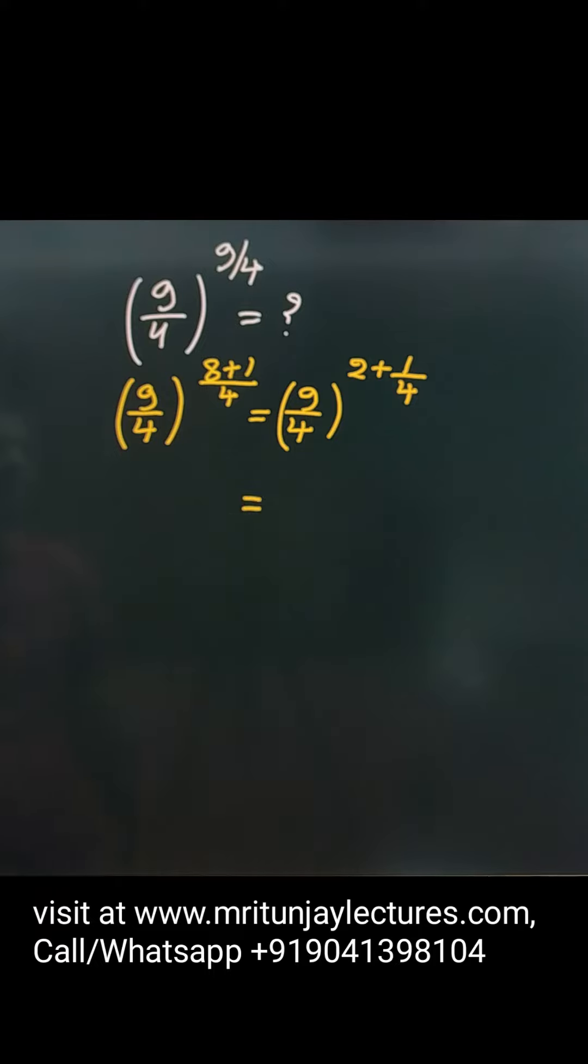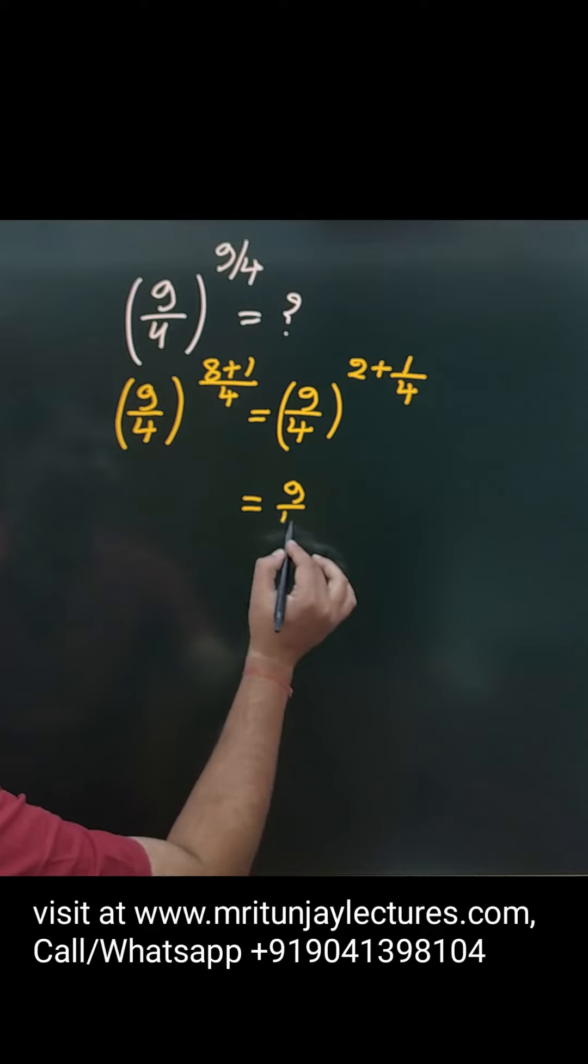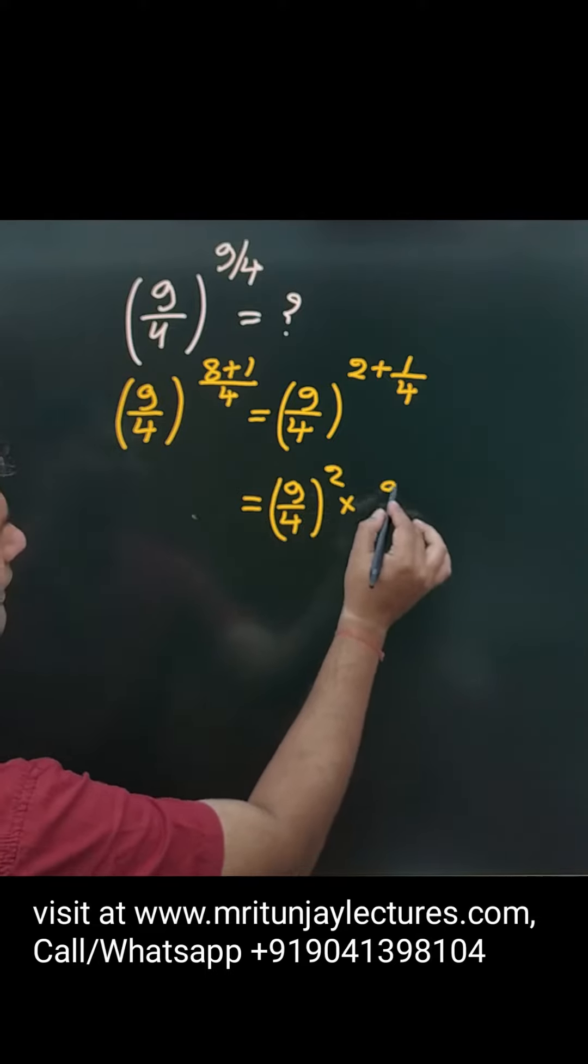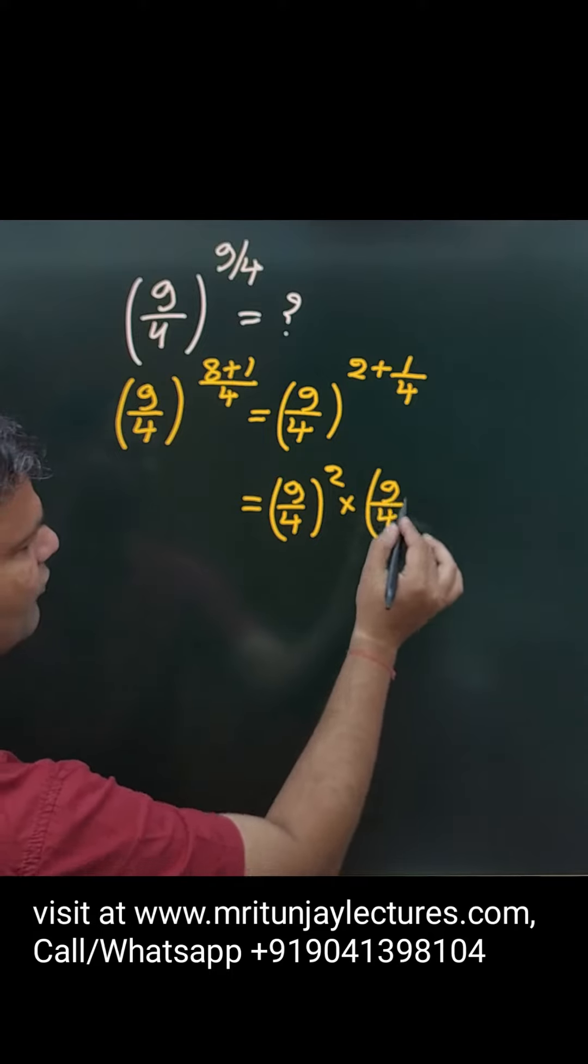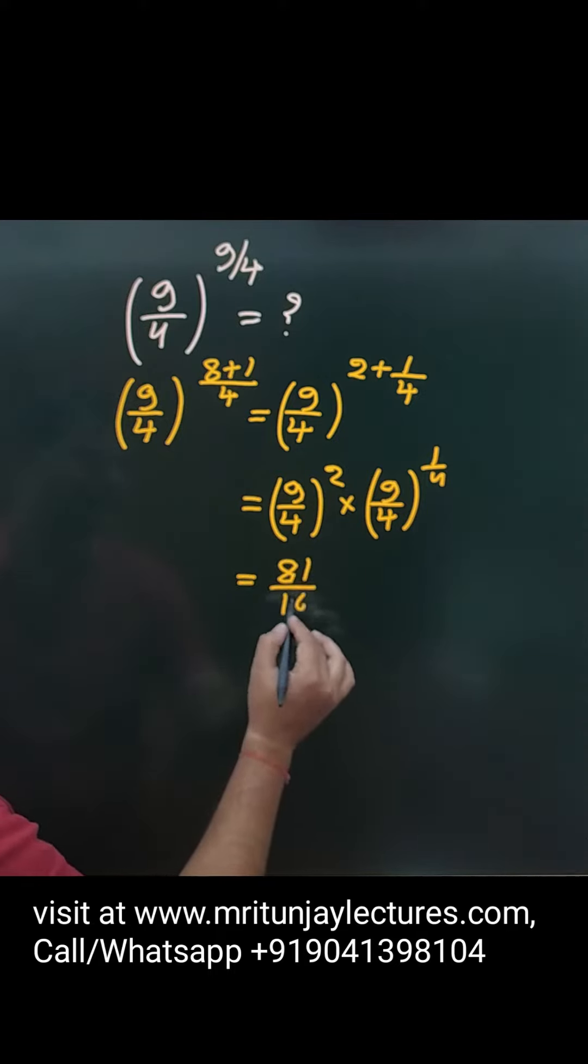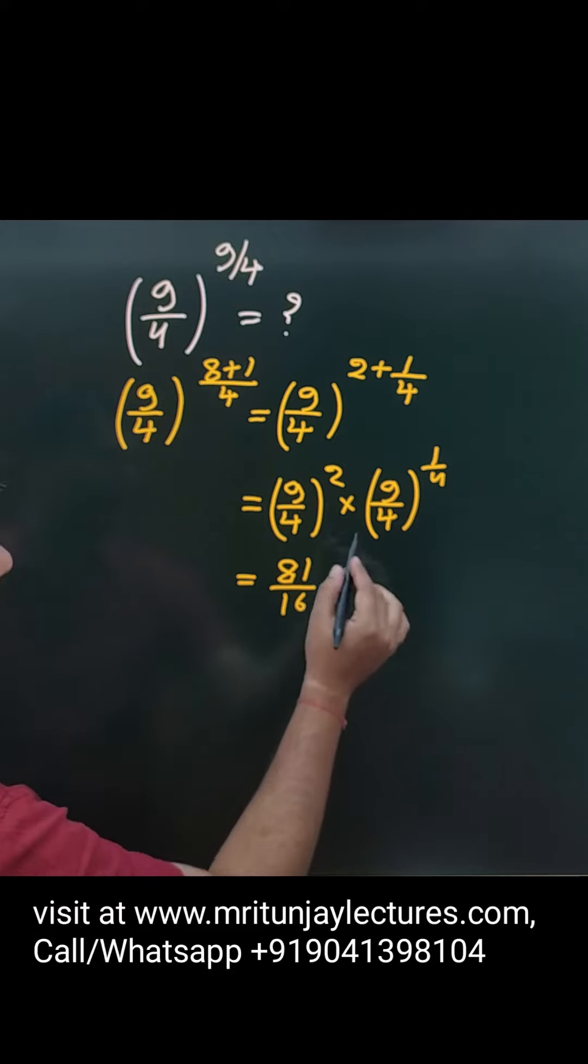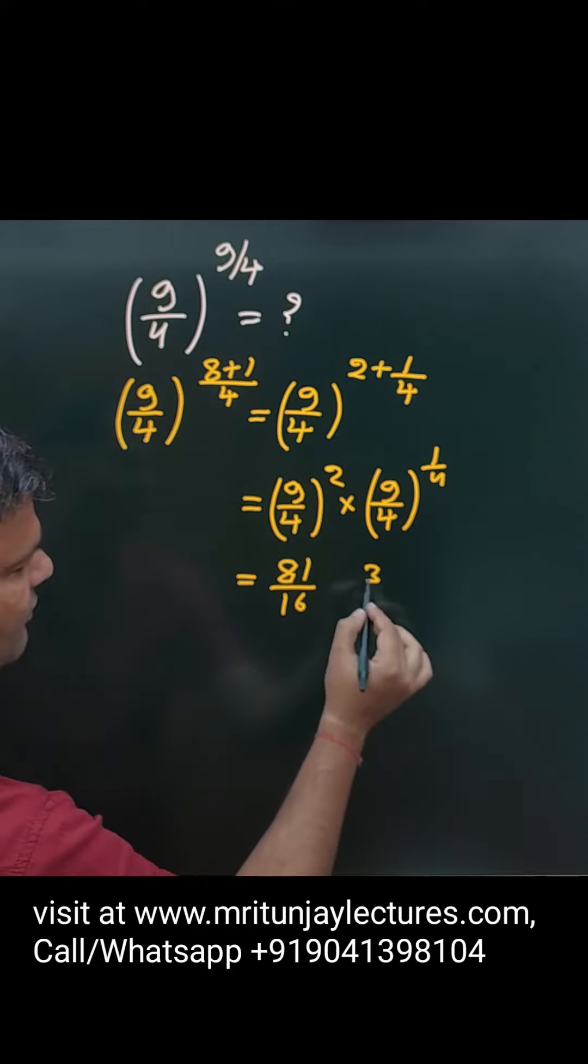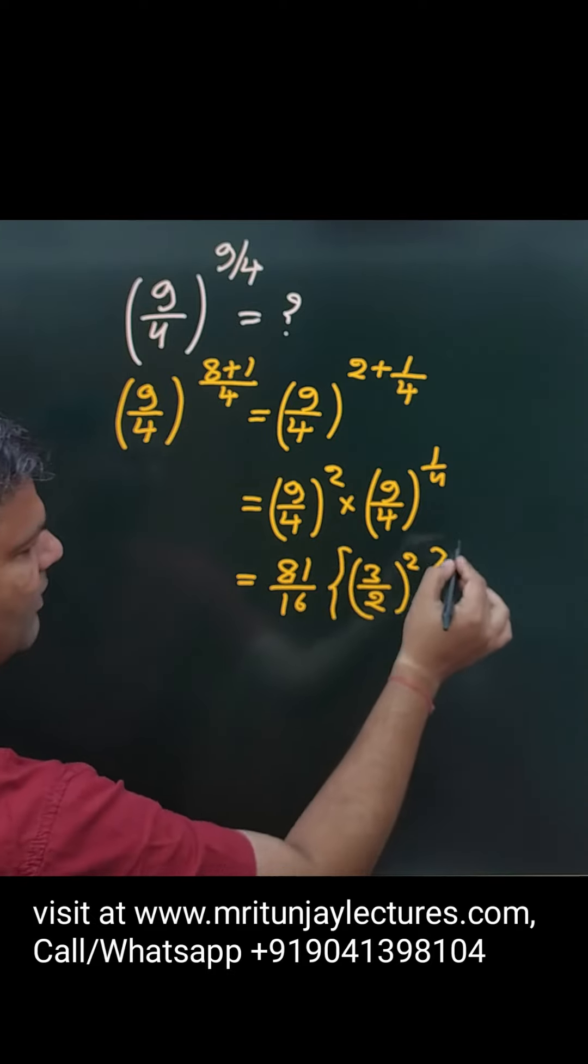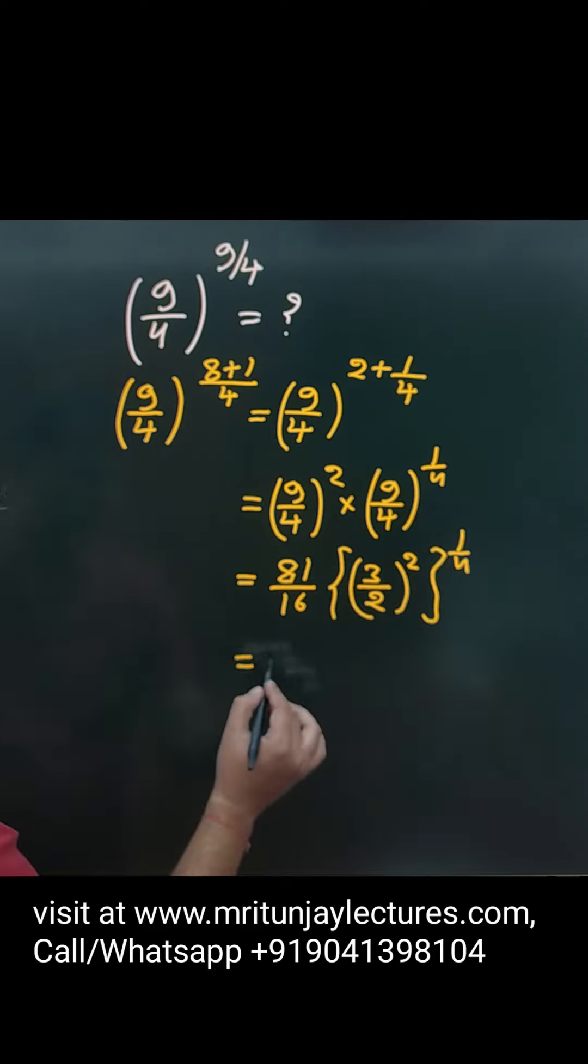That one written simply 9 by 4 to whole square into 9 by 4 to whole power 1 by 4, and that one is written 81 divided by 16. OK, and here that one, 3 by 2 to whole square to whole power 1 by 4.